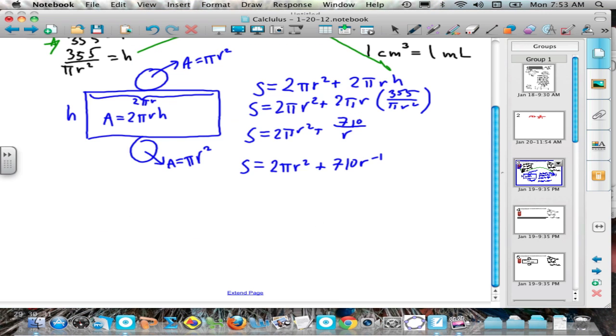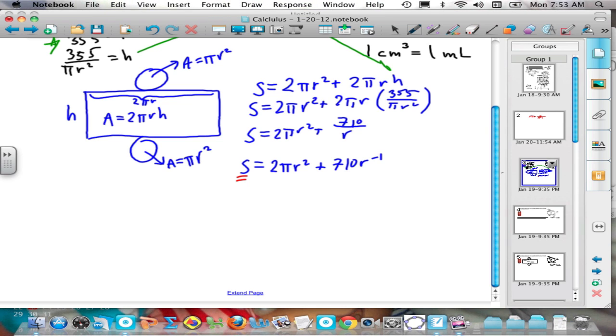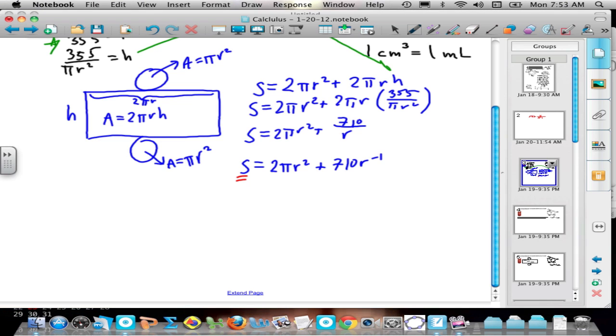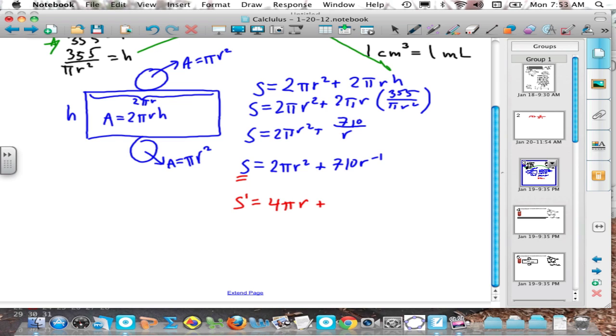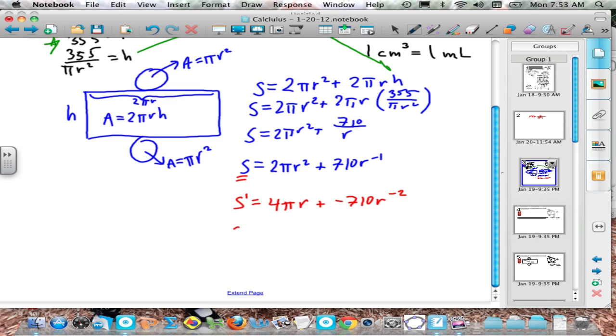Now, remember our task here is to try to minimize S. So in order to minimize S, we're going to need a derivative, and we're looking for an r that will produce an absolute minimum for surface area. So let's go ahead and do a derivative, and we'll use S prime for the derivative. And I'm going to get 4 pi r, and then over here, I'm going to get negative 710 r to the negative 2.